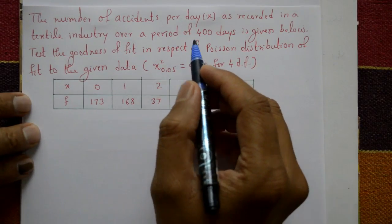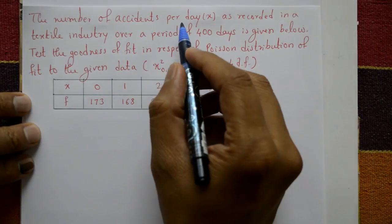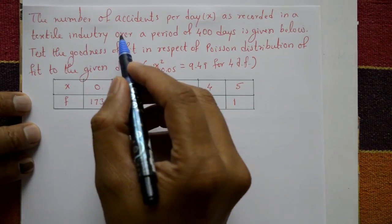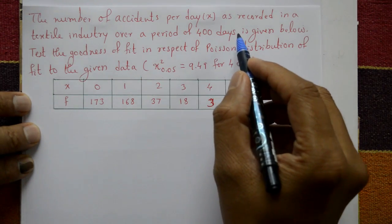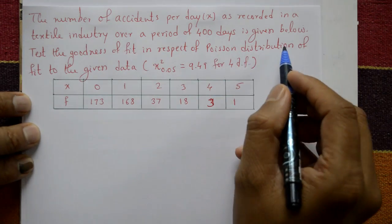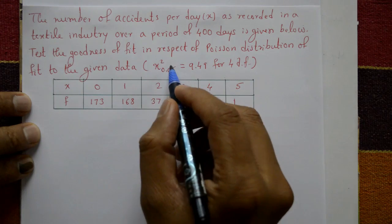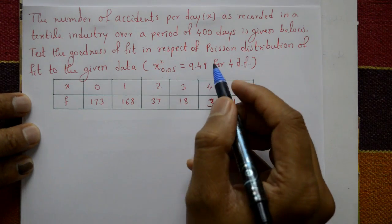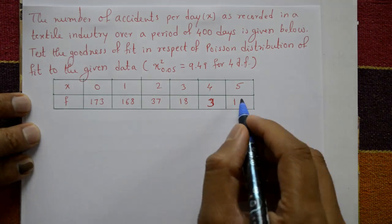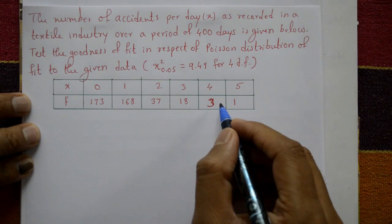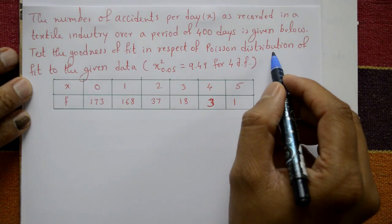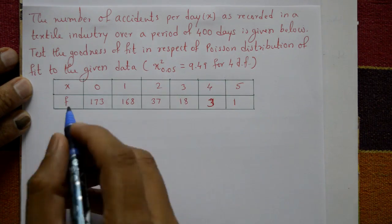This problem is a chi-square distribution problem. The number of accidents per day, x, as recorded in a textile industry over a period of 400 days is given. Test the goodness of fit with respect to Poisson distribution. The chi-square critical value is given as 9.49. The x values are 0, 1, 2, 3, 4, 5, and the corresponding frequencies are 173, 168, 37, 18, 3, and 1. First apply the Poisson distribution formula, then the chi-square distribution formula.